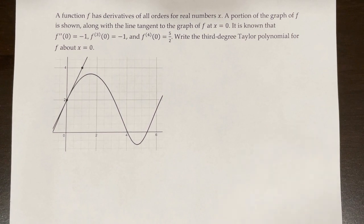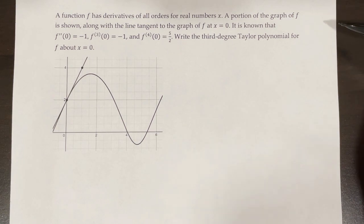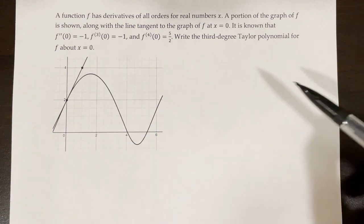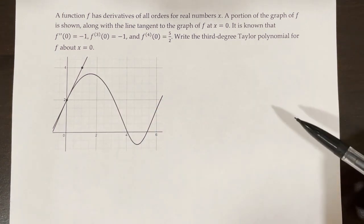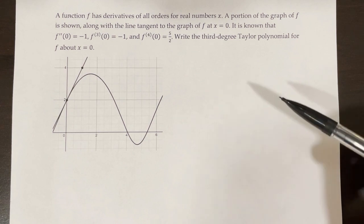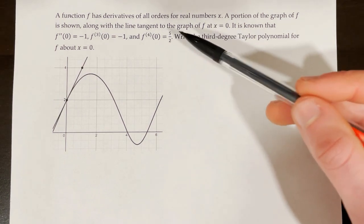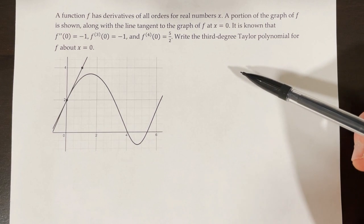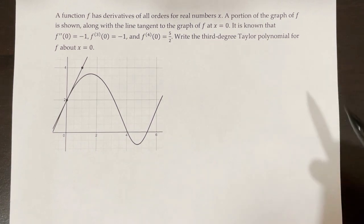A function f has derivatives of all orders for real numbers x. A portion of the graph of f is shown along with the line tangent to the graph of f at x equals 0. It is known that f double prime of 0 is equal to negative 1, f triple prime of 0 is equal to negative 1, and f quadruple prime of 0 is equal to 5 halves. Write the third degree Taylor polynomial for f about x equals 0.